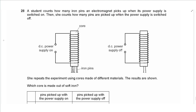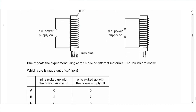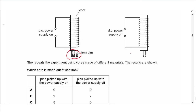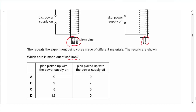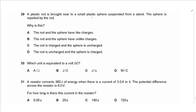Question 28: a student tests how many iron pins an electromagnet picks up with power on and then off, repeating with different core materials. Soft iron is a soft magnetic material — easily magnetized, so it attracts the most pins when current is on, and easily demagnetized, so it loses all magnetism and attracts no pins when current is off. The answer is D.